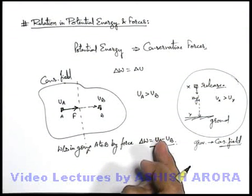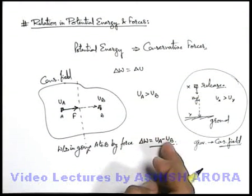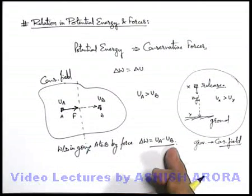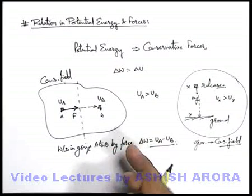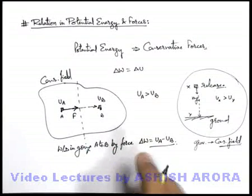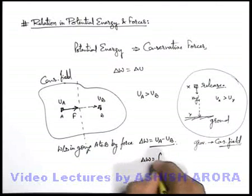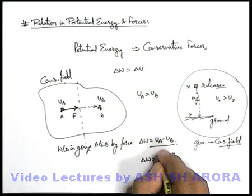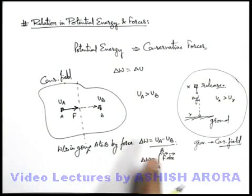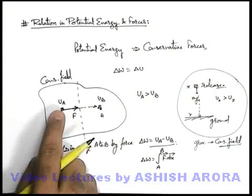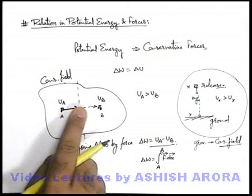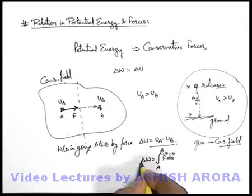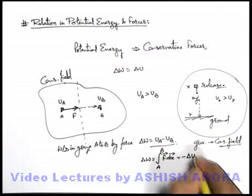We have already studied that in the case of a conservative field, work done depends only on the initial and final energy, not on the path along which it is taken. So mathematically, delta W can be written as the integral of F dot dx from point A to point B. When the body moves and potential energy decreases, we can write that work done is equal to minus delta U. The negative sign shows that energy is decreasing.